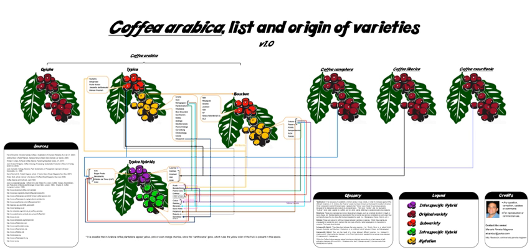Coffee varieties are the diverse subspecies derived through selective breeding or natural selection of coffee plants. While there is tremendous variability encountered in both wild and cultivated coffee plants, there are a few varieties and cultivars that are commercially important due to various unique and inherent traits such as disease resistance and fruit yield. These unique traits are what producers use to select breeds when developing crops.